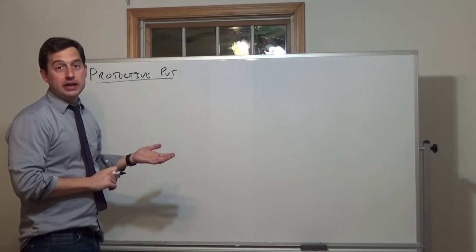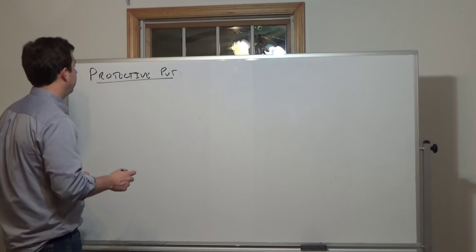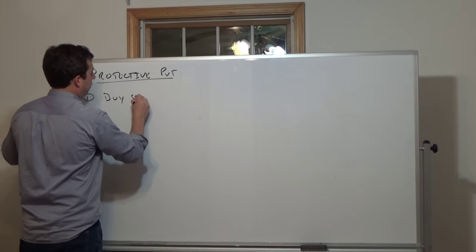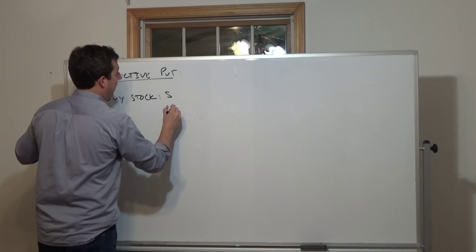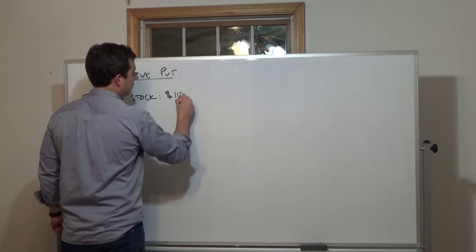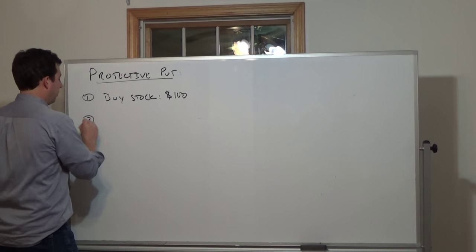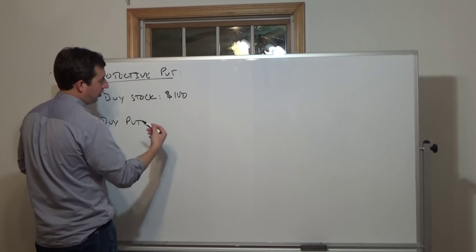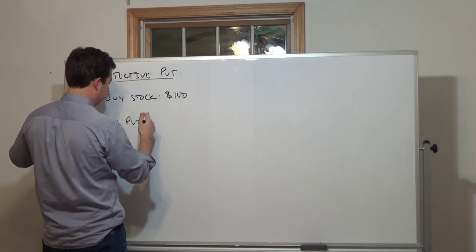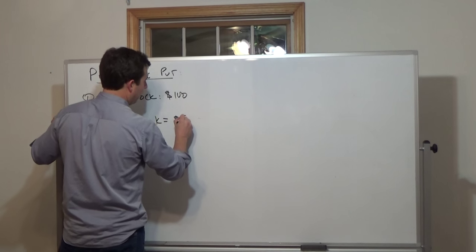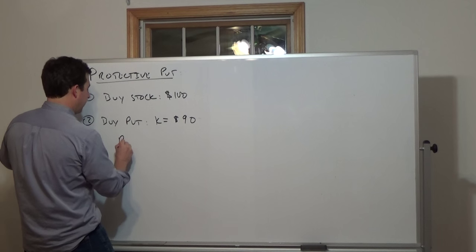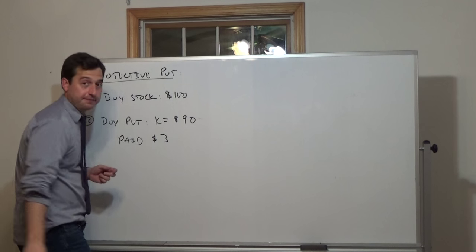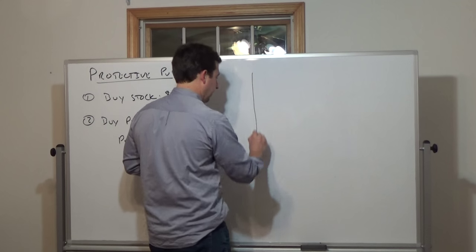The first two we're going to talk about are a protective put and a covered call. The idea of a protective put strategy is: one, we buy the stock — let's say we buy the stock for $100. And two, we buy a put option with a strike below the stock price. So let's say we buy a put with a strike price equal to $90, and we paid $3 for the put premium.